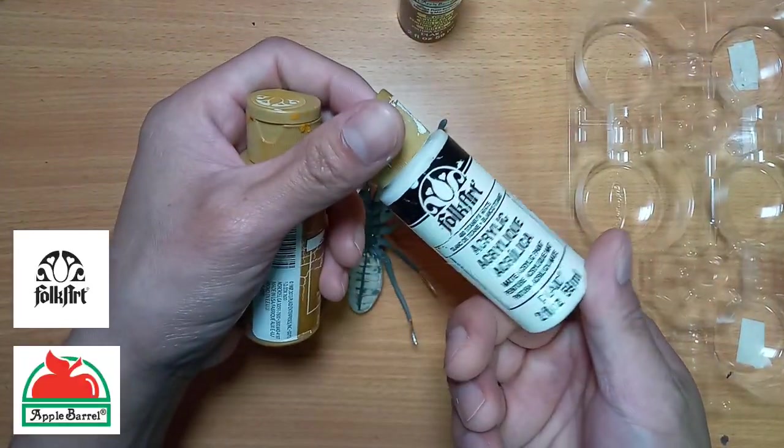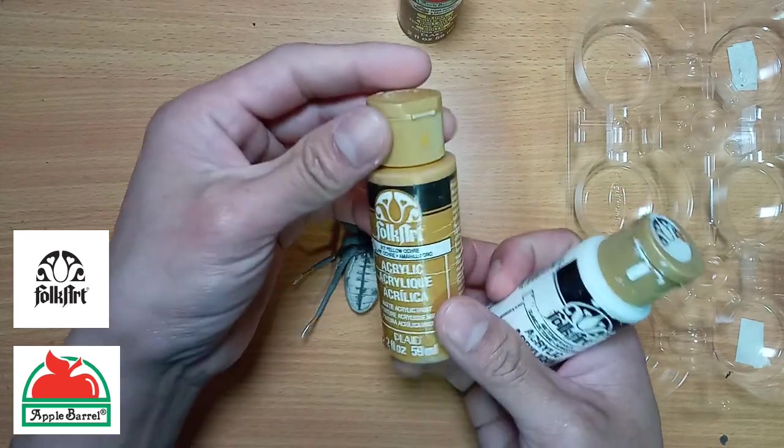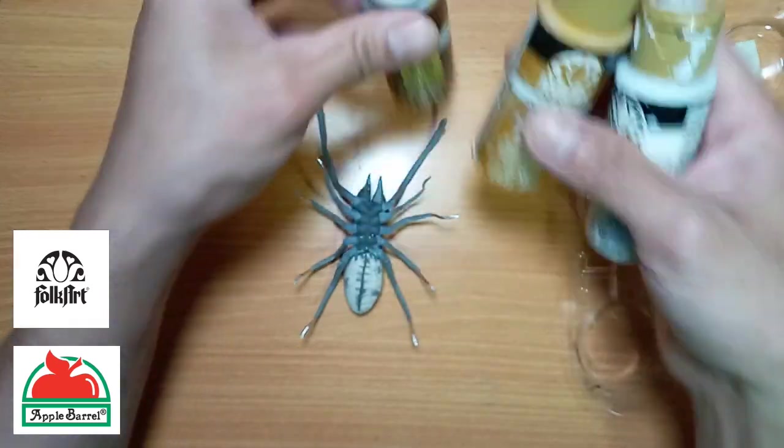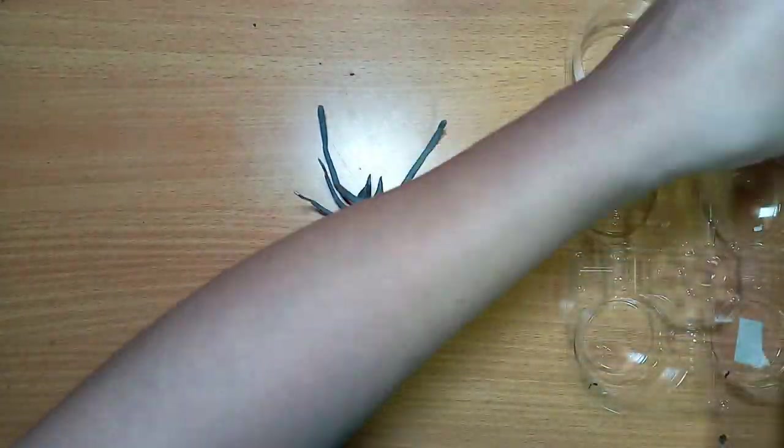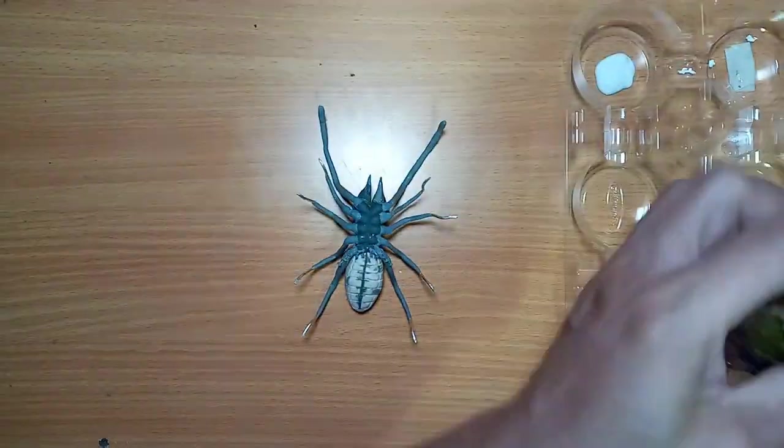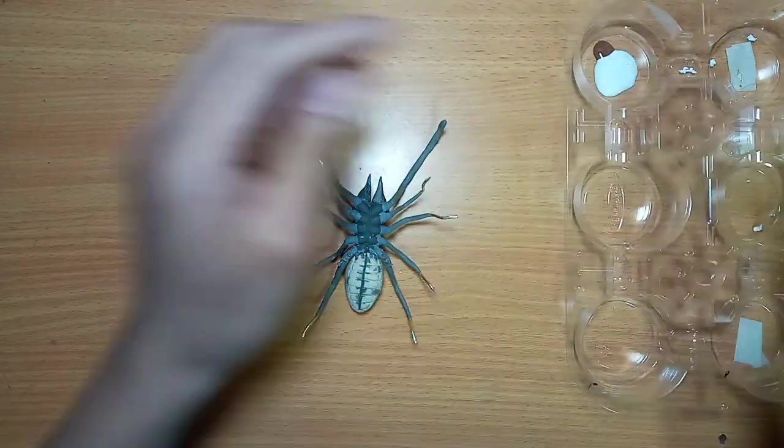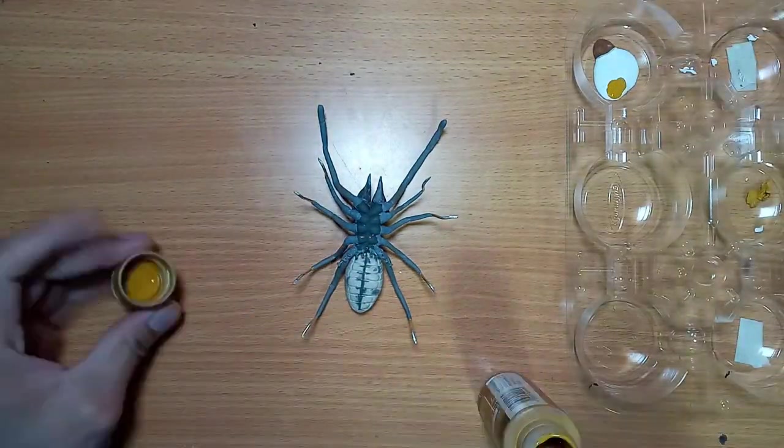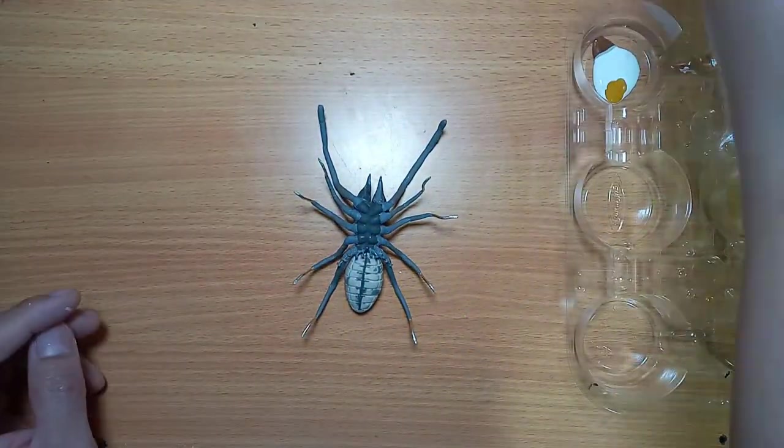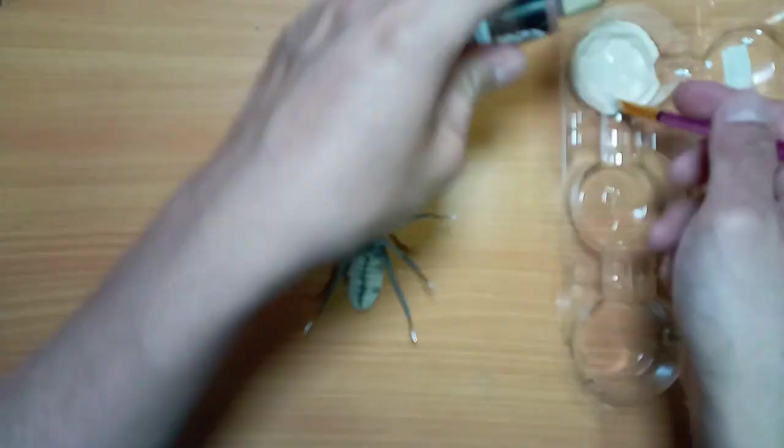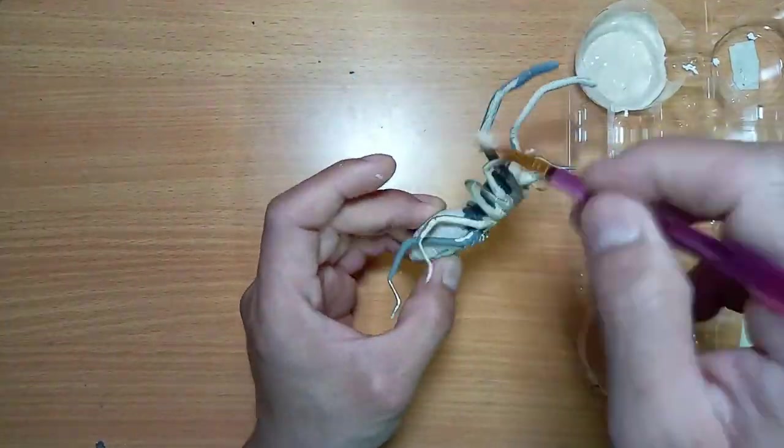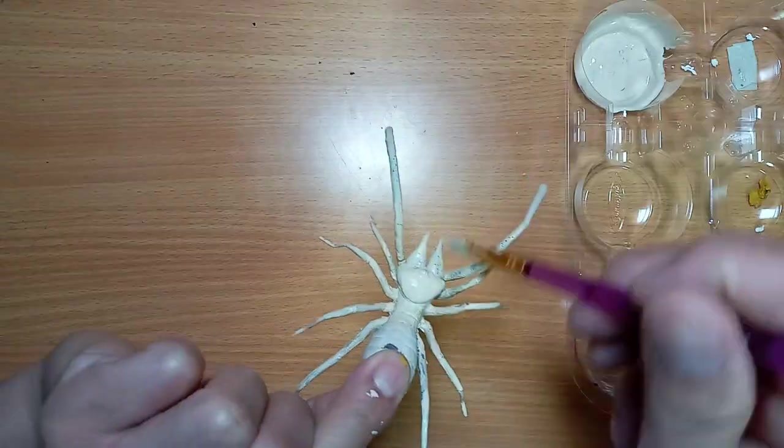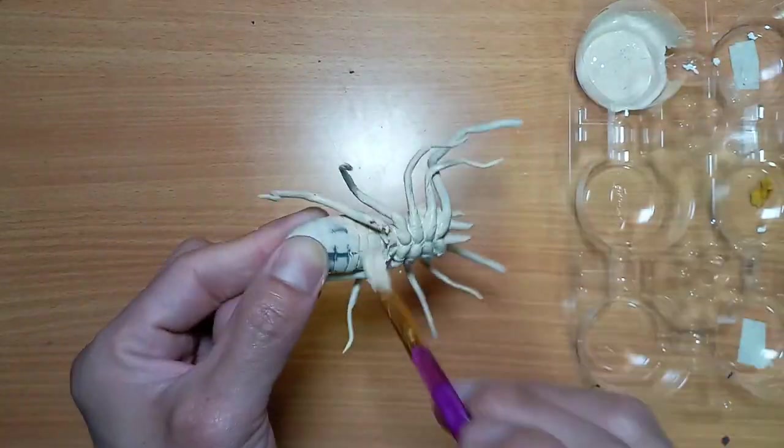And now for the painting process. For its general body color, I use Folk Art acrylic paints of Titanium White, Yellow Ochre, and Real Brown of Apple Barrel brand. I did two coatings until the clay underneath is no longer visible.